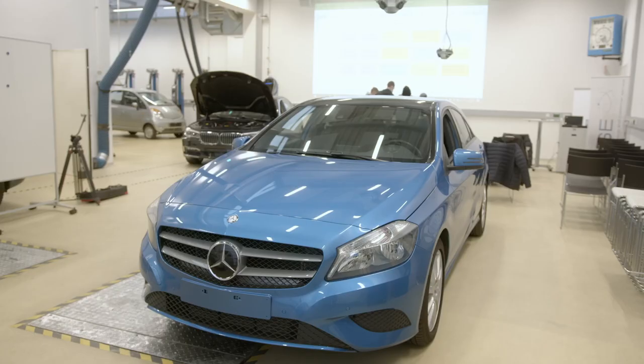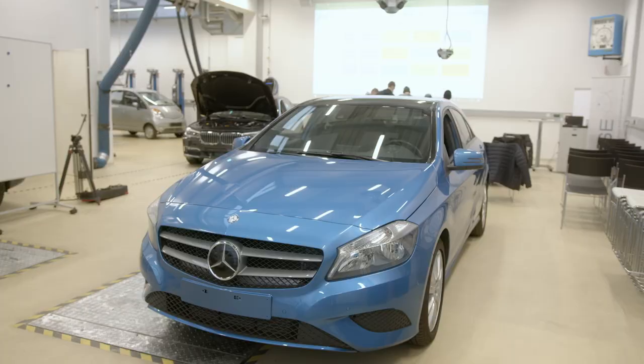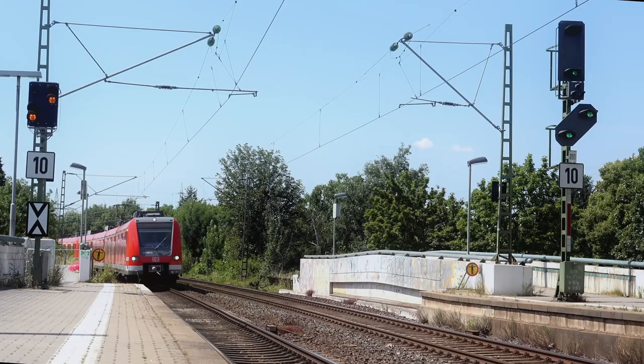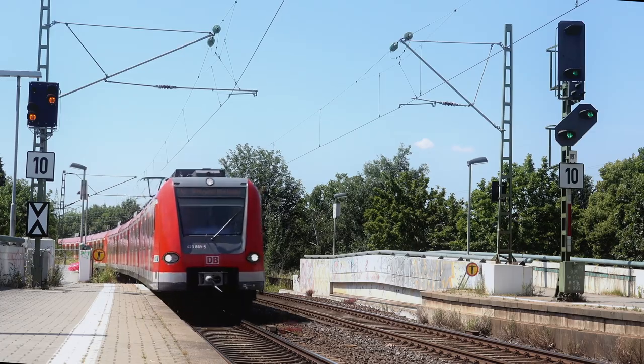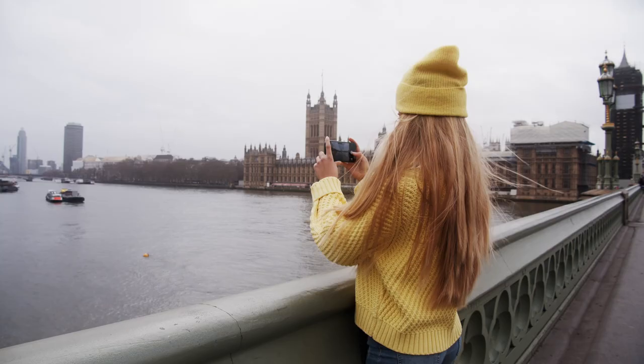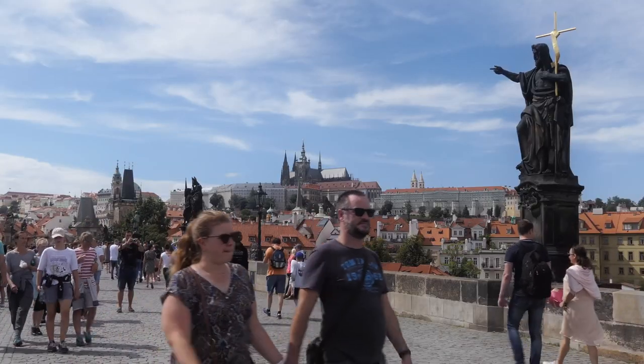Esslingen lies in the heart of the German automotive industry, 15 minutes from Stuttgart, the capital of Baden-Württemberg. The location is ideal for travel, with Berlin, Paris, London, and Prague within striking distance.